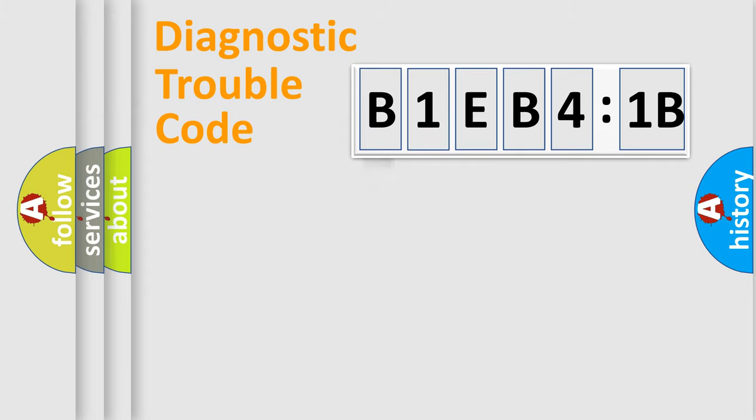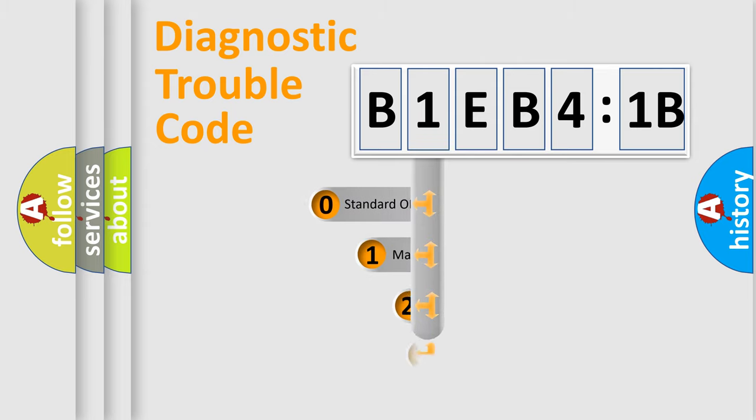Powertrain, Body, Chassis, and Network. This distribution is defined in the first character code.